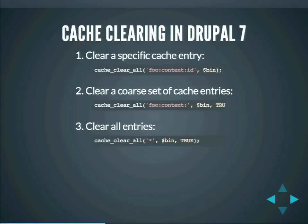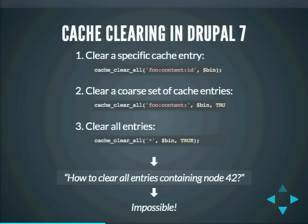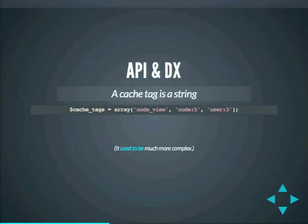The question is: how do we clear all cache entries that contain node 42, even if it's just the node title? Anything that is rendered, cached, and uses anything from node 42 — how do we figure out the cache IDs to invalidate? The answer is we cannot do that. It's simply impossible. And that is where cache tags come in.